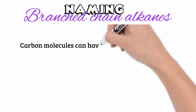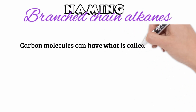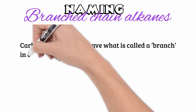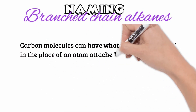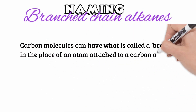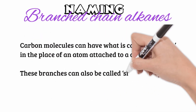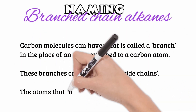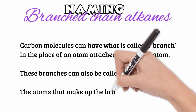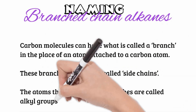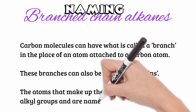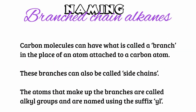In organic chemistry, carbon molecules can have what is called a branch — in the place of an atom attached to a carbon atom. These branches can also be called side chains. The atoms that make up the branches are called alkyl groups, and are named using the suffix '-yl'.